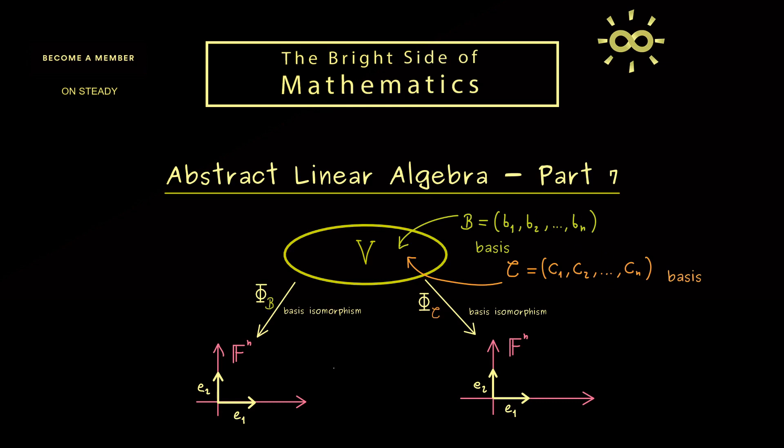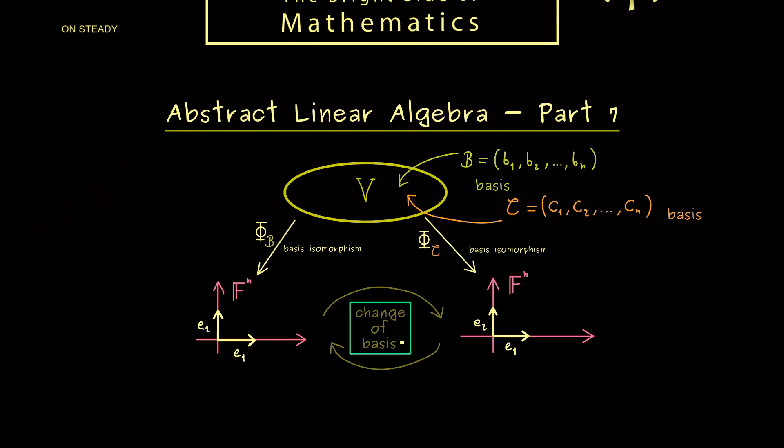Hence what you want to know is how this switch is represented here on the lower level. So you could say how can I change the representation I have with the basis B to the representation I have with respect to the basis C. And exactly this translation here on the lower level is what we call change of basis. Okay then I would say let's go into the definition there.